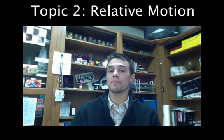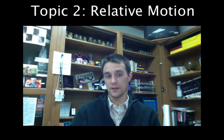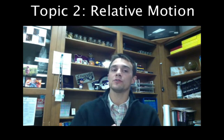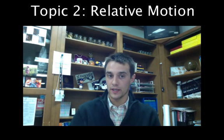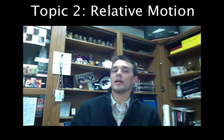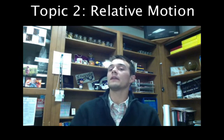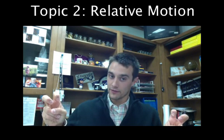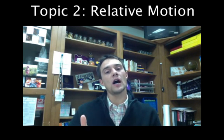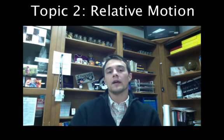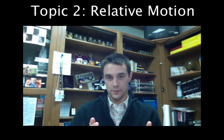Many objects move at different rates, and we're constantly trying to compare their speeds and velocities to one another. We've learned to use reference points to establish that an object is in motion. But what happens when you choose to use a moving reference point to describe an object or multiple objects in motion? Then you're making everything relative.